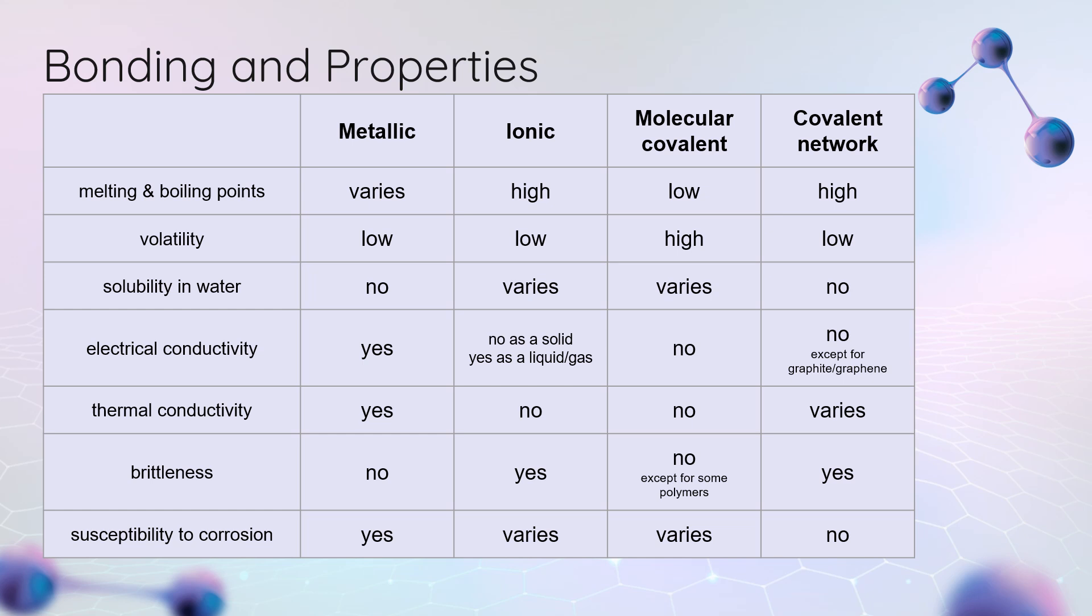This table is showing us lots of properties and then predictions related to those properties regarding the bonding that we're going to find in any given substance. For example, if I have a metallic structure, probably going to have some pretty high conductivity, but also really low volatility. We haven't talked about brittleness. This is basically just the opposite of malleability. So metals are malleable, which means that they are not brittle, whereas ionic structures, those lattices are going to be more brittle, less malleable.